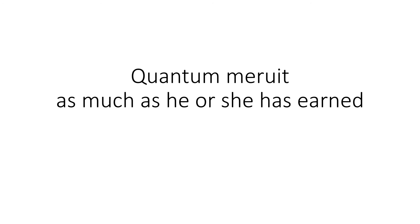'Quantum meruit' means as much as he or she has earned. If you have done some work, you will be paid for the amount of work done and the period spent on it. In simple words, if you work for four hours you get paid for four hours; if you work for eight hours you get paid for eight hours. You get paid according to the effort and time you contribute.